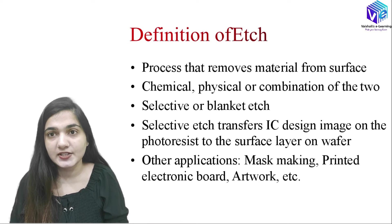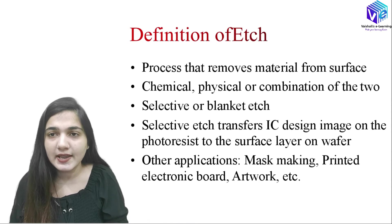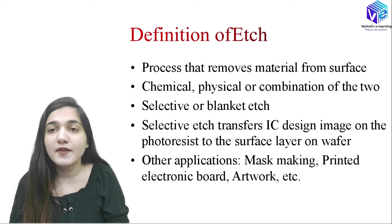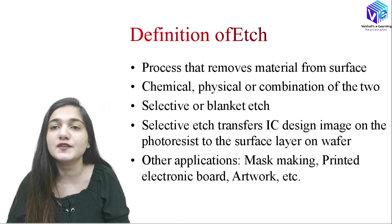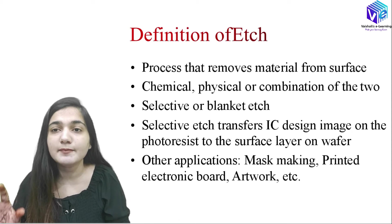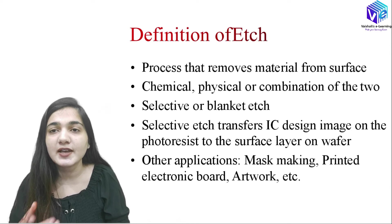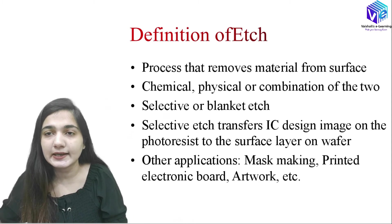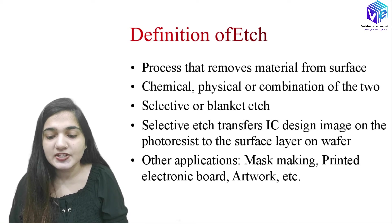There are two other types: selective etching and blanket etching. Selective etching is done at a particular area to make masks or patterns. For example, after photolithography I have photoresist over selected areas; I then remove the SiO2 from those selected areas — this is selective etching. In blanket etching, the complete layer is removed entirely — for example, removing the complete SiO2 layer.